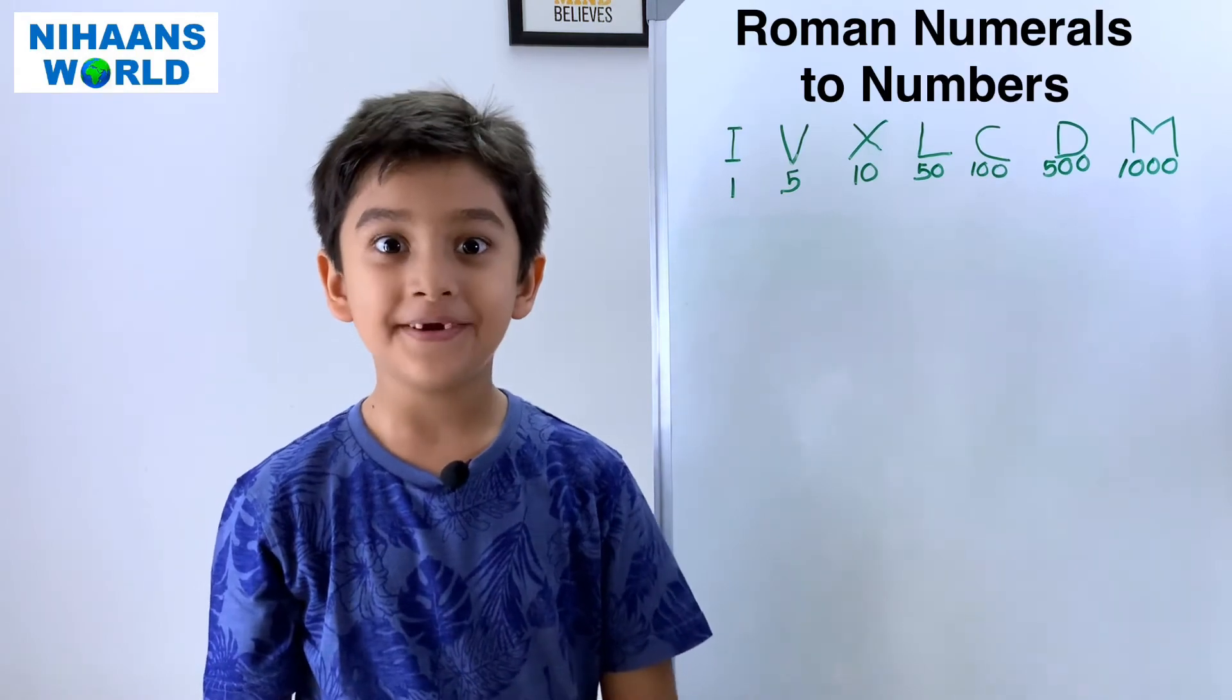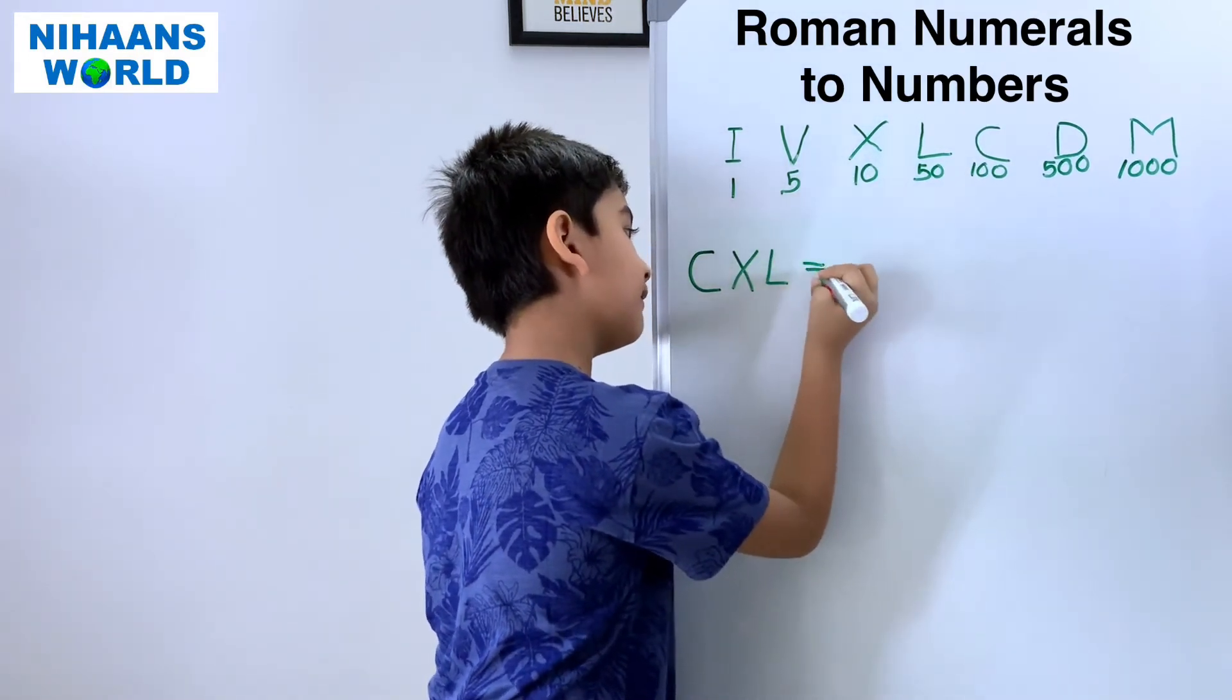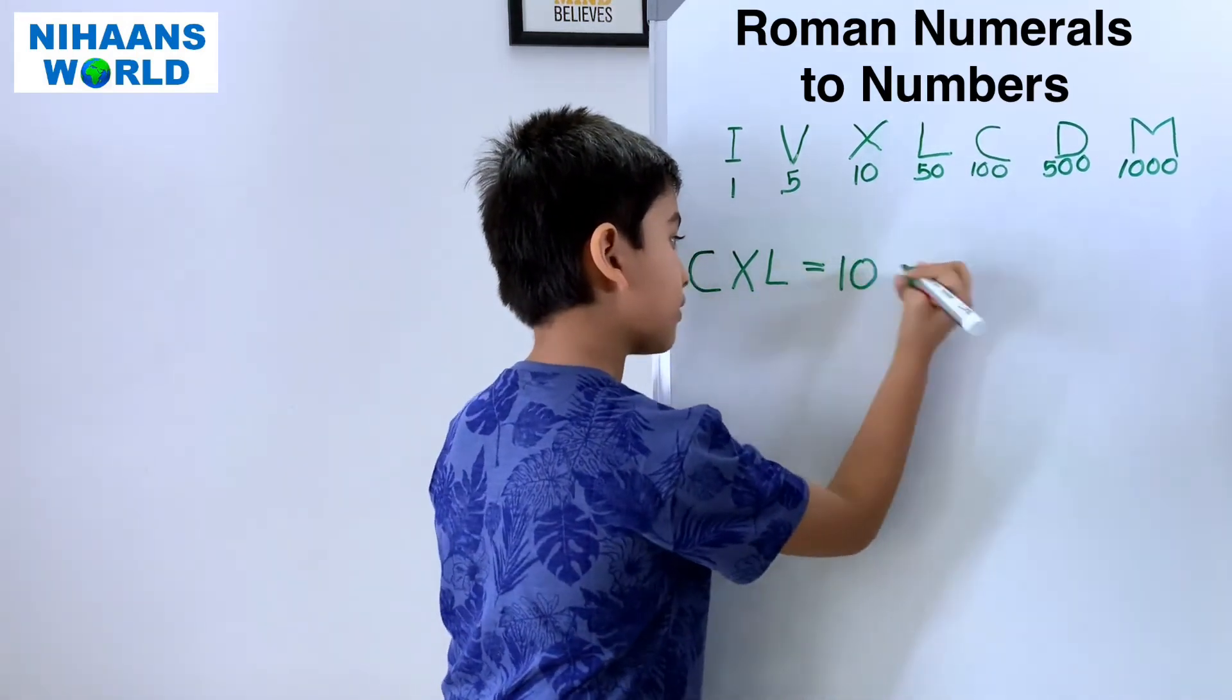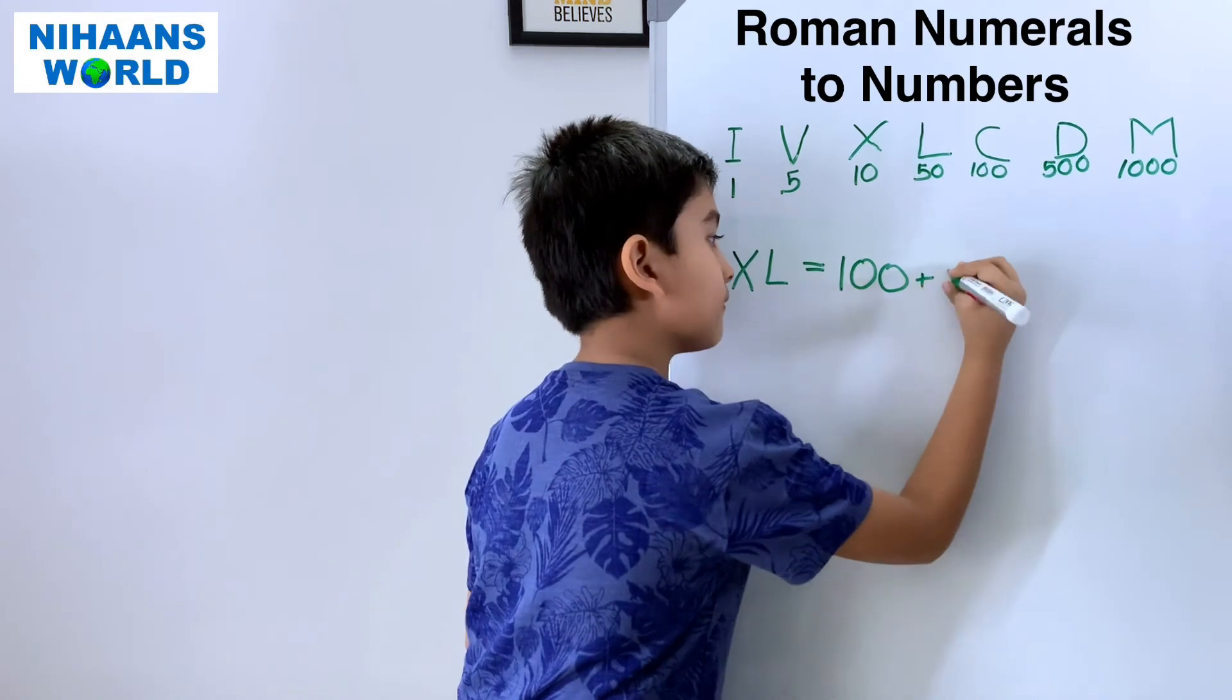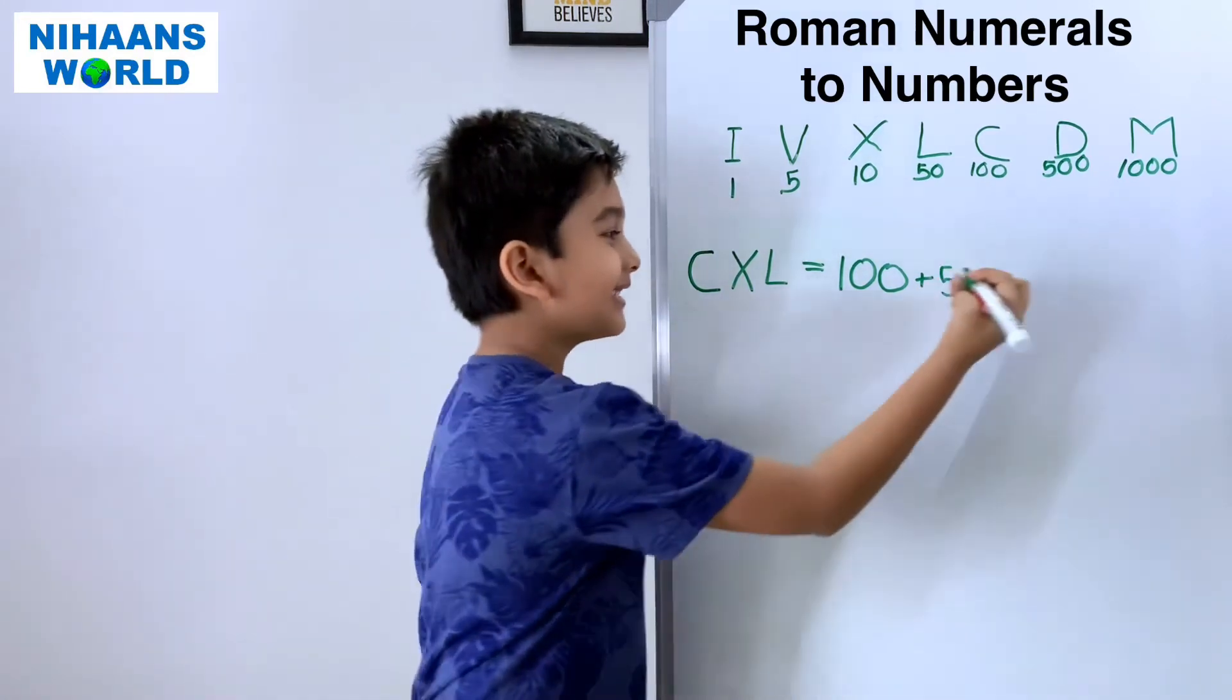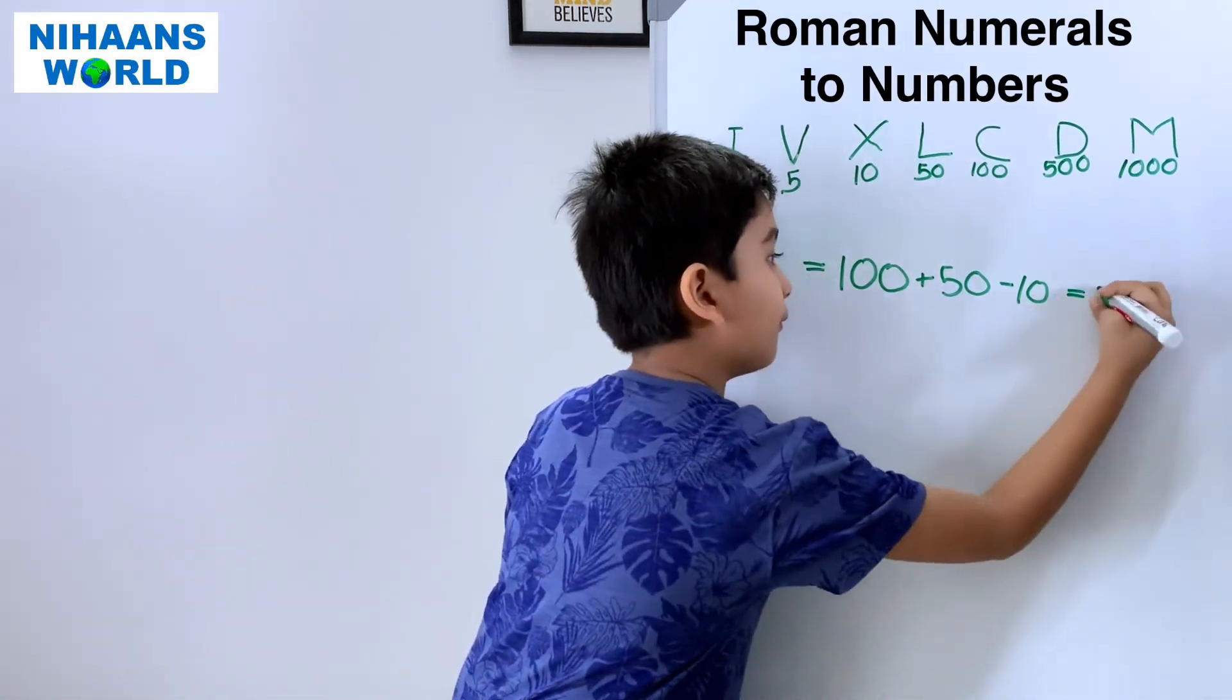Let's solve one more example. C X L. C stands for one hundred. And L stands for fifty. And X stands for ten. Because we have to minus, so fifty minus ten is equal to forty. So, the answer is one hundred forty.